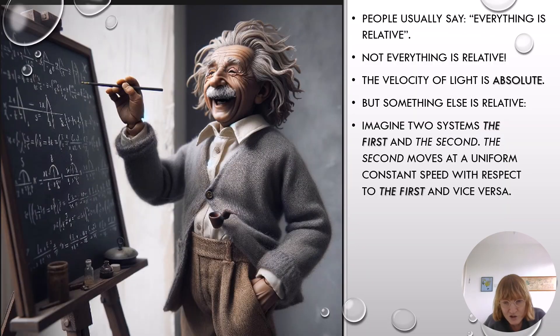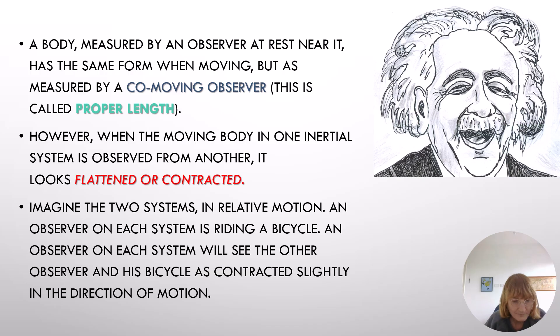People usually say everything is relative. Not everything is relative. The velocity of light is absolute, but something else is relative. Imagine two systems, the first and the second. The second moves at a uniform constant speed with respect to the first and vice versa. A body measured by an observer at rest near it has the same form when moving, as measured by a co-moving observer. This is called proper length.